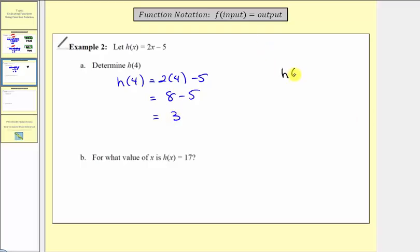We determined that the function value h(4) equals three. So when the input is four, the output is three. This also represents the ordered pair four comma three.